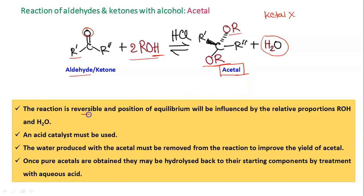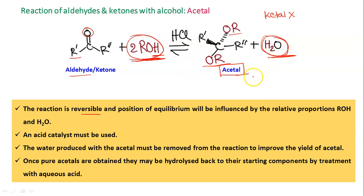This reaction is reversible, and the position of equilibrium can be controlled by the relative amount of alcohol or water. According to Le Chatelier's principle, when the amount of alcohol is high the reaction is favorable toward the forward direction, and if the amount of water is high the equilibrium shifts backward. To get acetal as product, we remove the byproduct water by azeotropic distillation and must use an acid catalyst. To get back the aldehyde or ketone from acetal, we use aqueous acid (H₂O + H⁺).